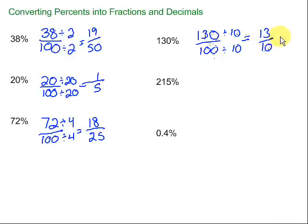Then we want to convert that into a mixed number. Remember to do that, we see how many 10s can we take out of 13? We can take 1. If we take 1 ten out of 13, how many do we have left? 3. So 1 and 3 tenths.